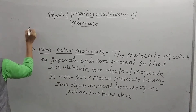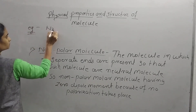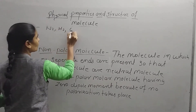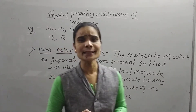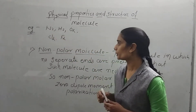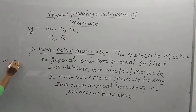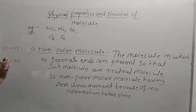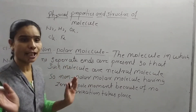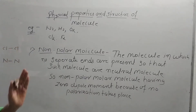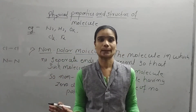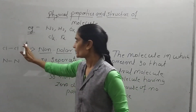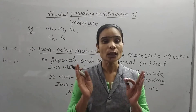Examples of nonpolar molecules are N2, H2, O2, Cl2, and F2. For example, N2 is written as N-N, and Cl2 as Cl-Cl. These nitrogen atoms do not have any type of charge. So in such molecules no polarization takes place, and because of no polarization, such molecules have zero dipole moment.